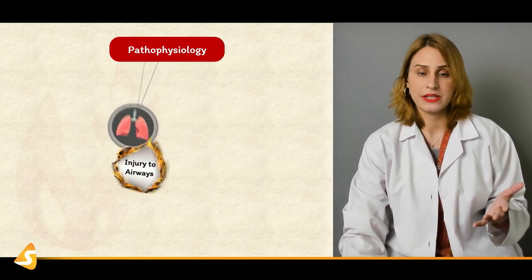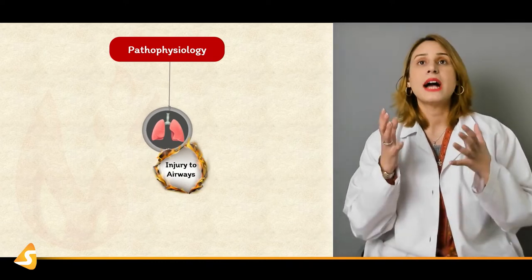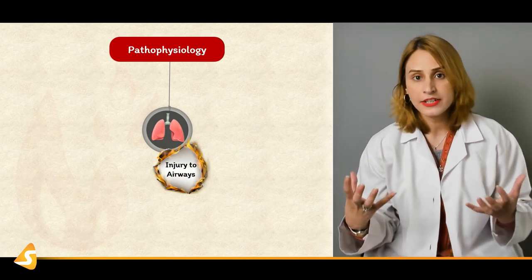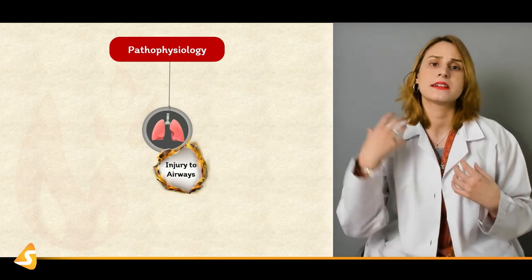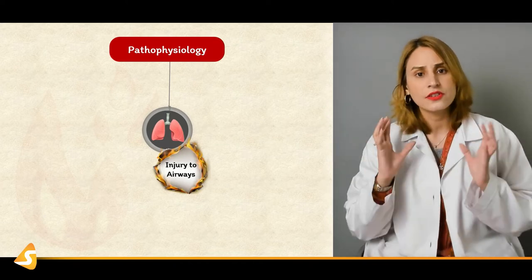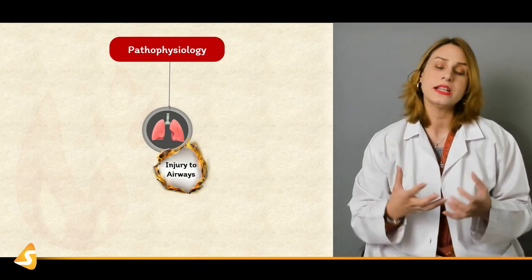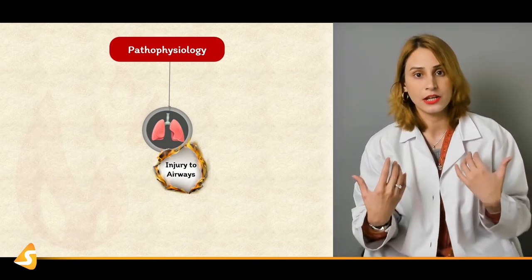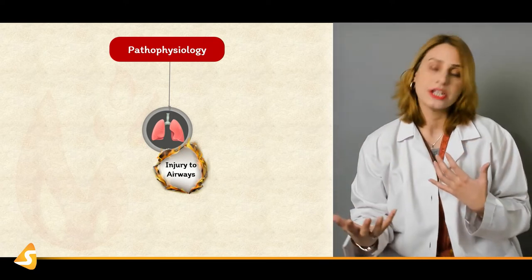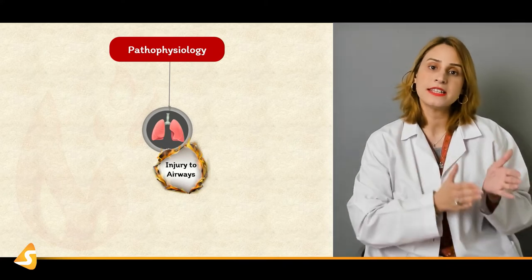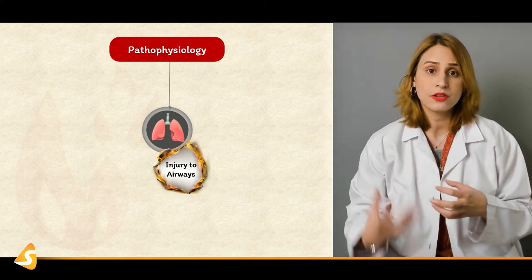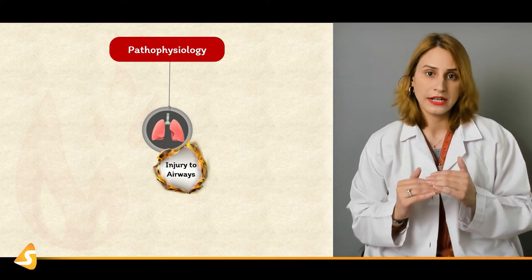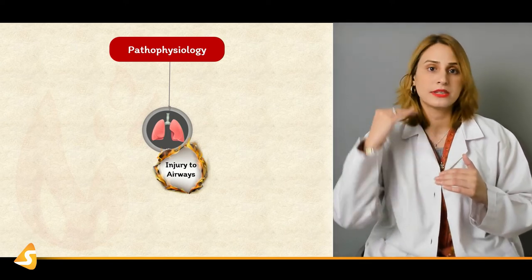What do we mean by injury to the airway? When a patient comes to your ER with facial puffiness, swelling, singed hair, or laryngeal edema, you should suspect injury to the airway involving the face and neck. All injuries involving the face and neck region — you should always suspect airway injury. When we talk about the airway, there is an upper airway and a lower airway. The upper airway is above the pharynx, and then you have the subglottic and supraglottic airways.